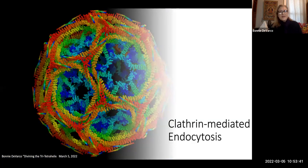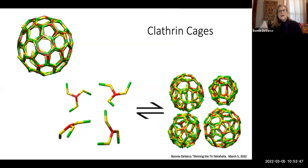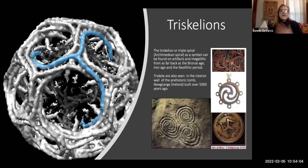Now we'll move on to clathrin — the protein in the brain and in the body that exchanges nutrients and information by taking itself apart and putting itself together thousands and thousands of times a day. Probably millions of these little proteins actually bring things together through endocytosis.